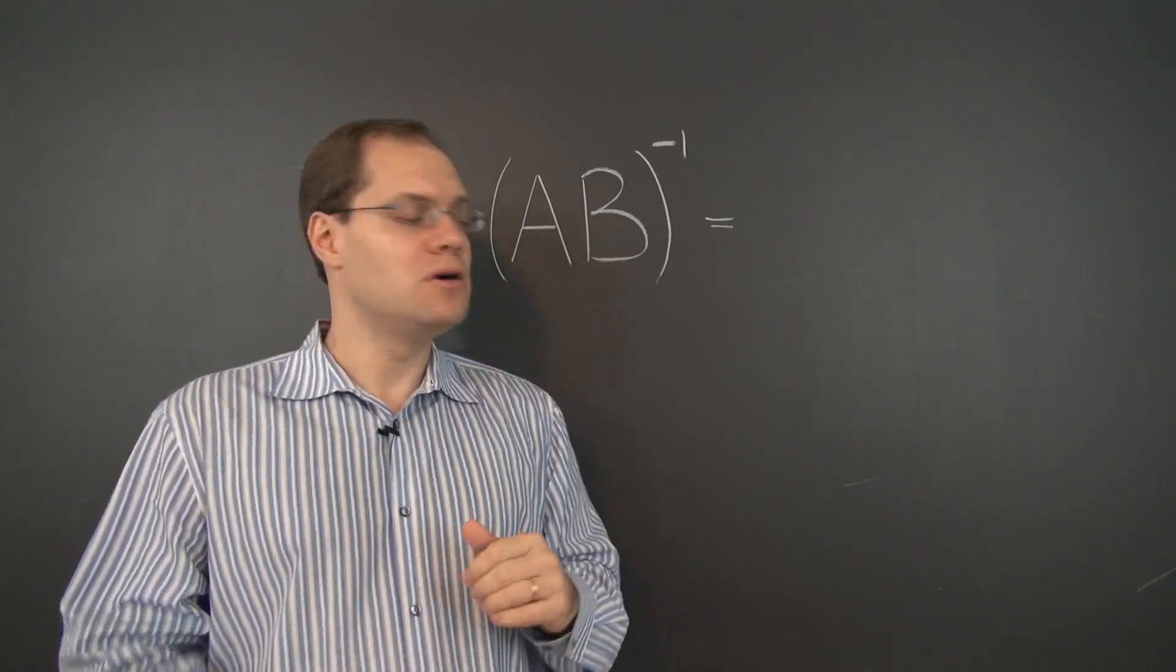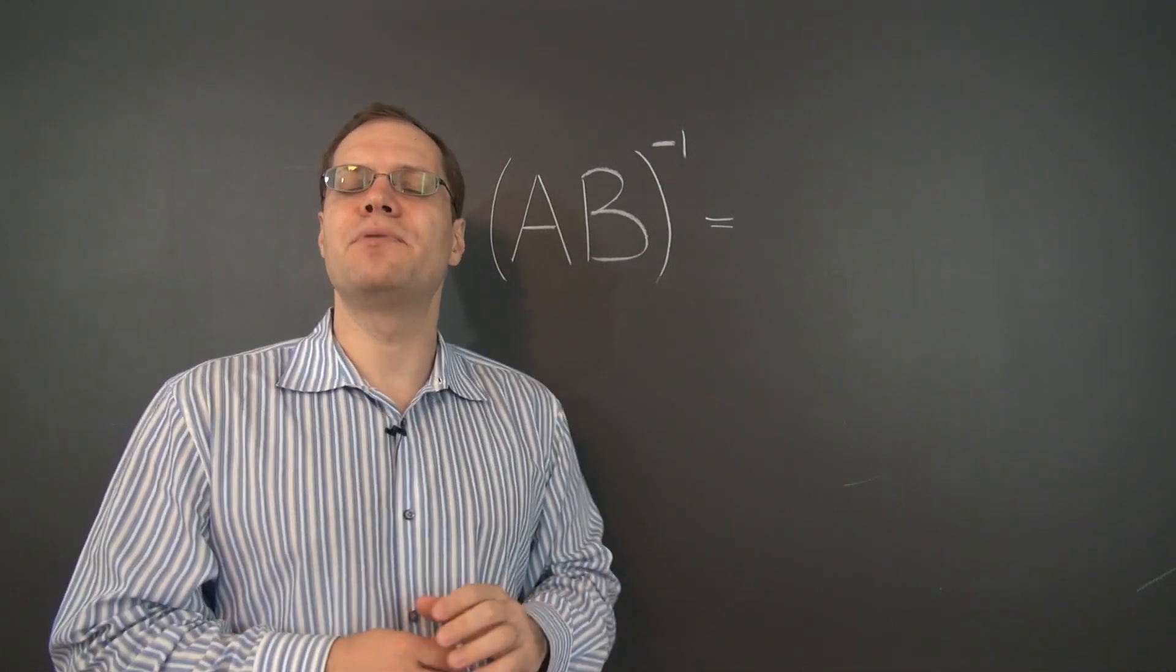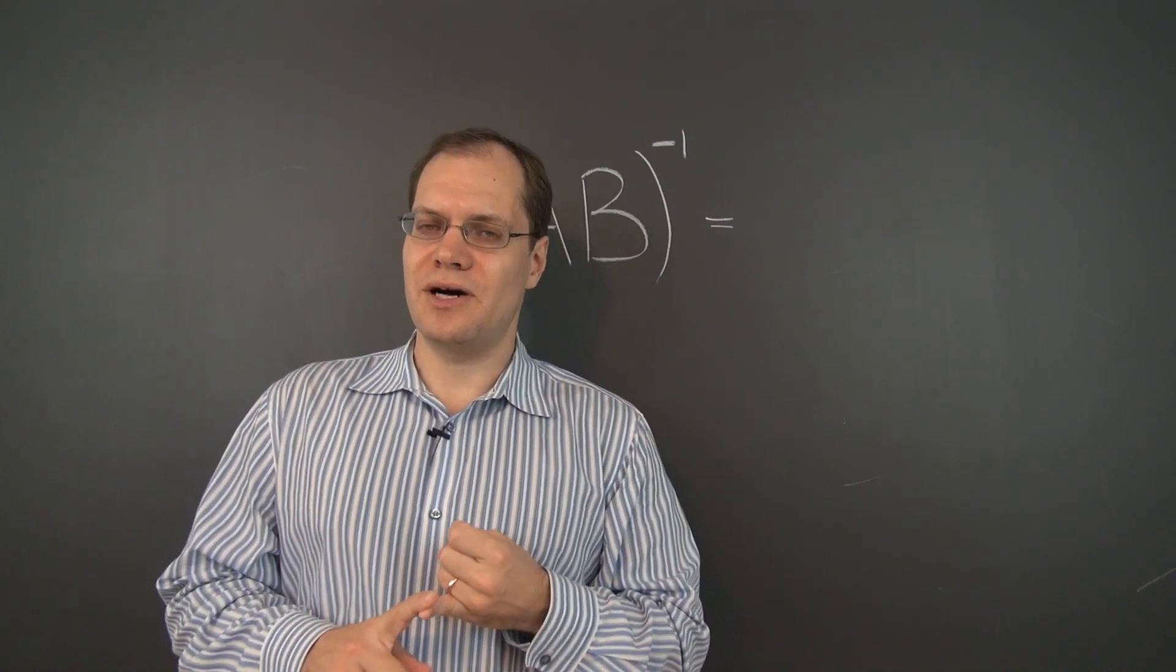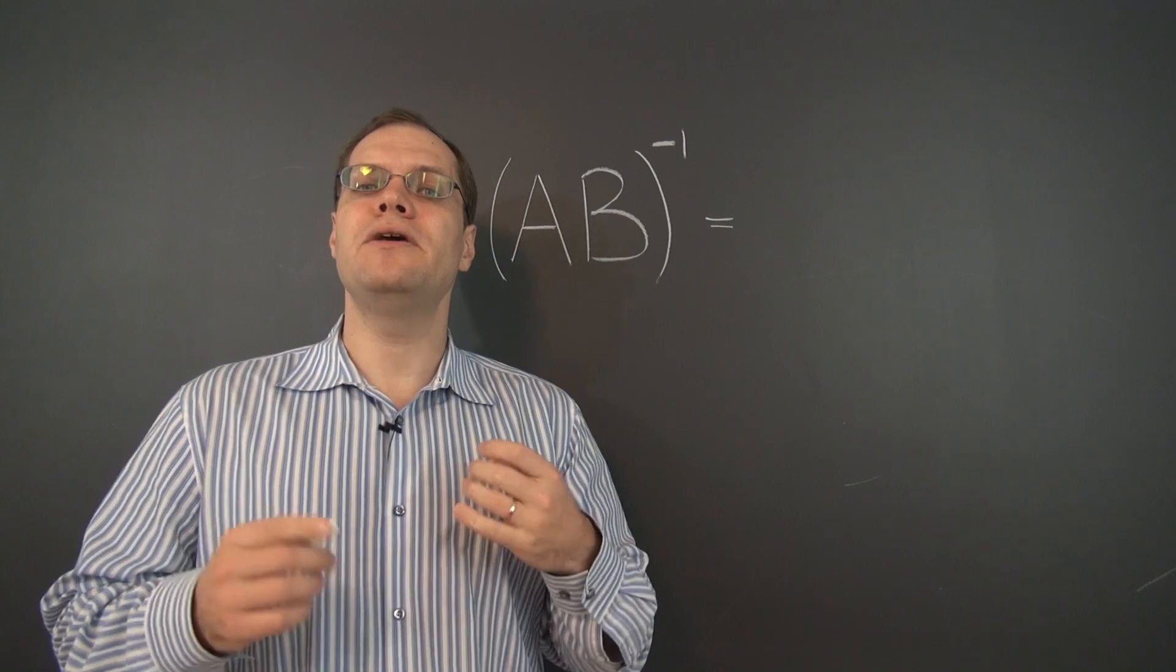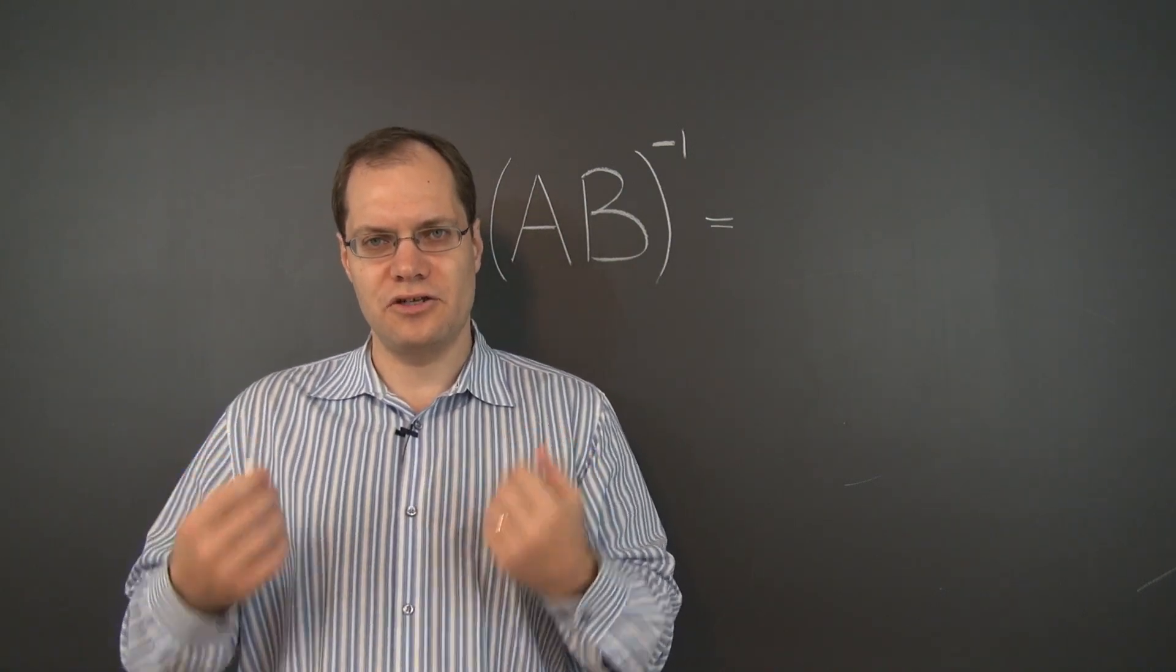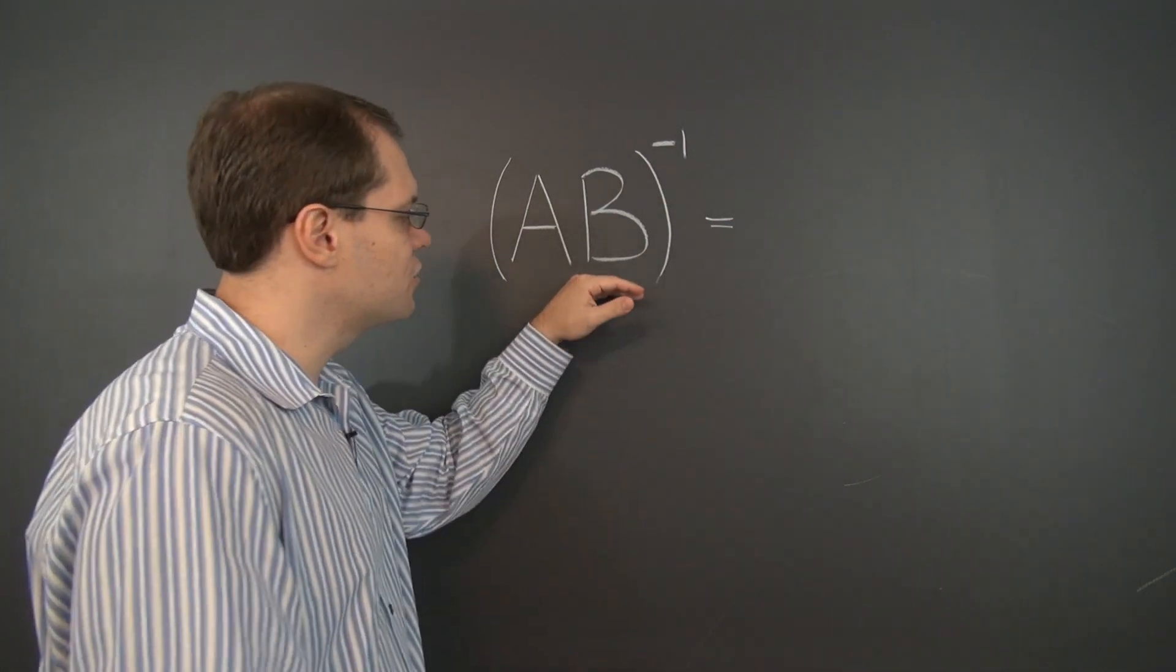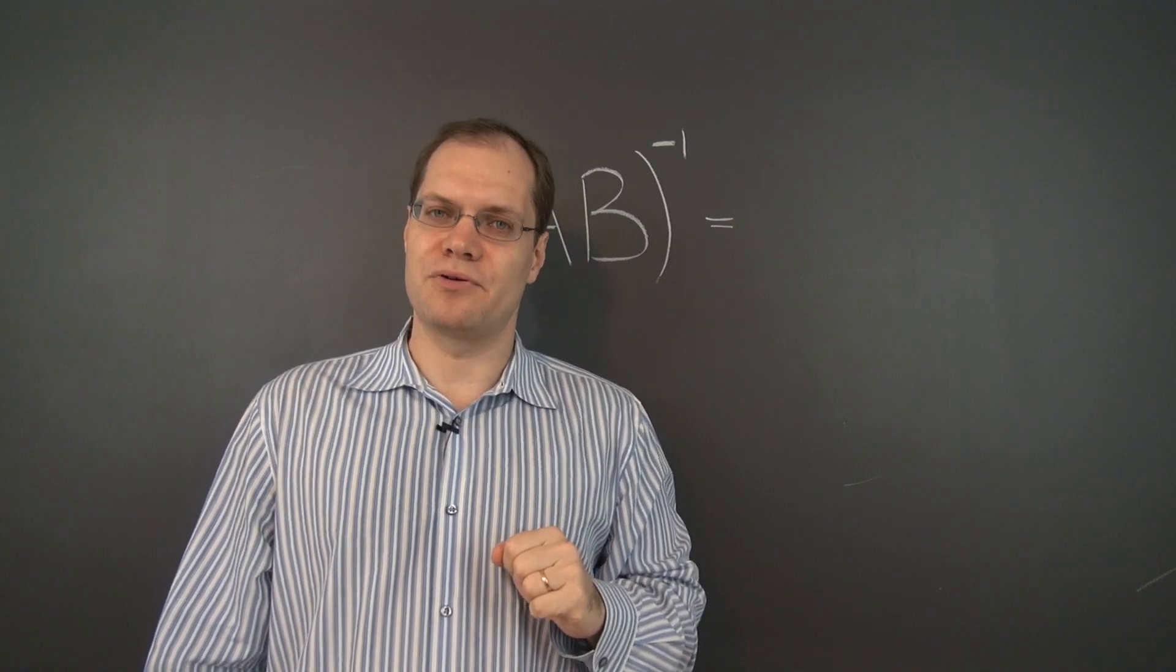Now what we could do is pursue the inversion algorithm by writing identity next to AB and performing Gaussian elimination. That will work, but of course that's quite time-consuming. And maybe we can save a lot of time by using the two inverses that we already know. Maybe we can combine them in such a way that will produce the inverse of AB. And that will result in a fewer number of operations.